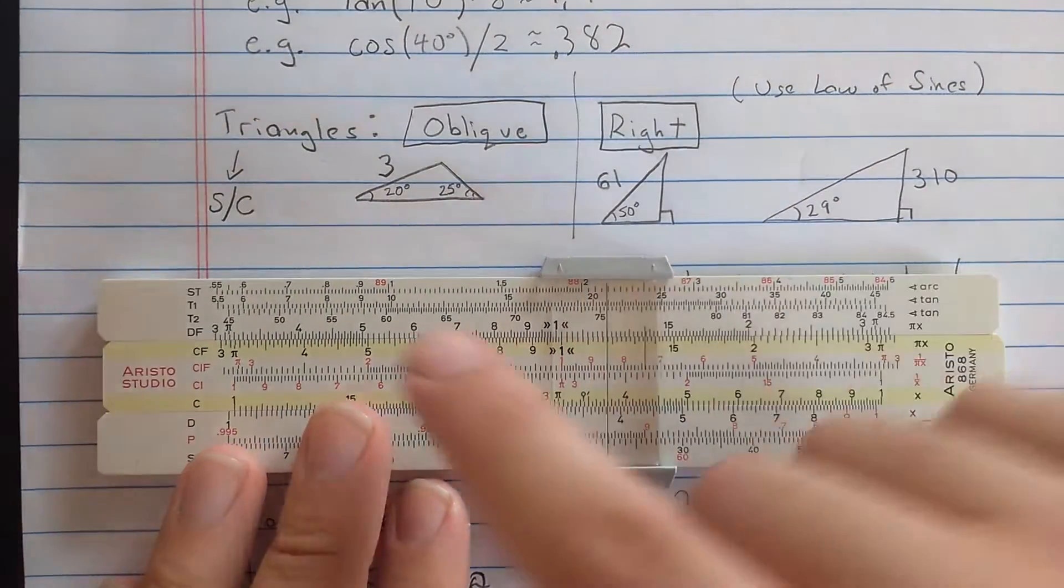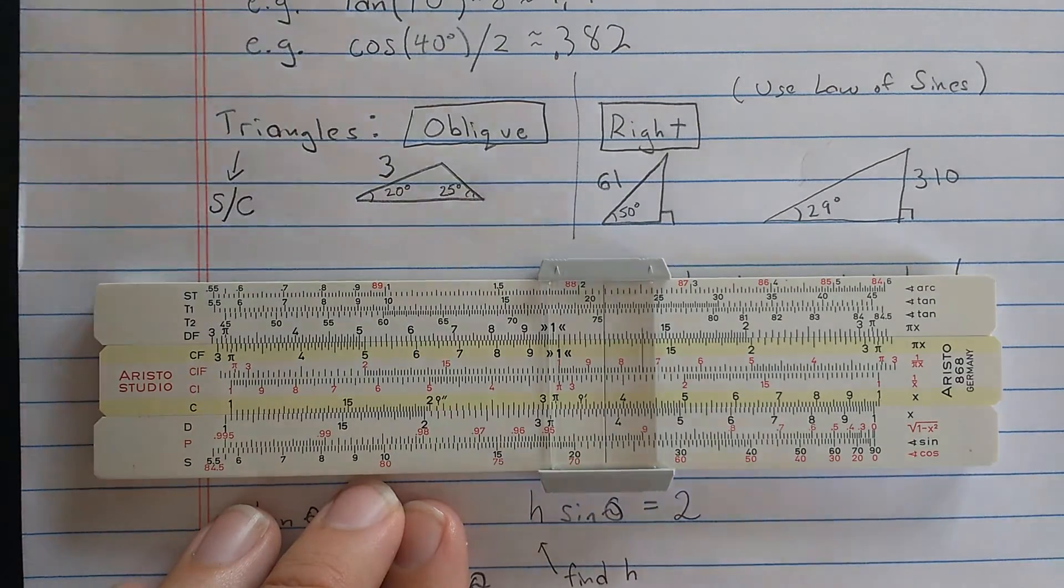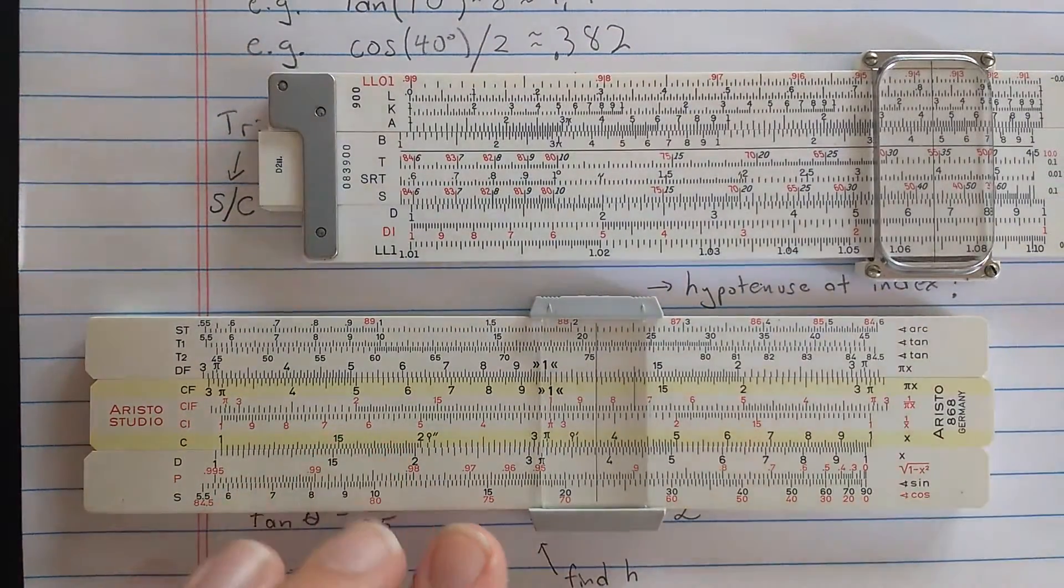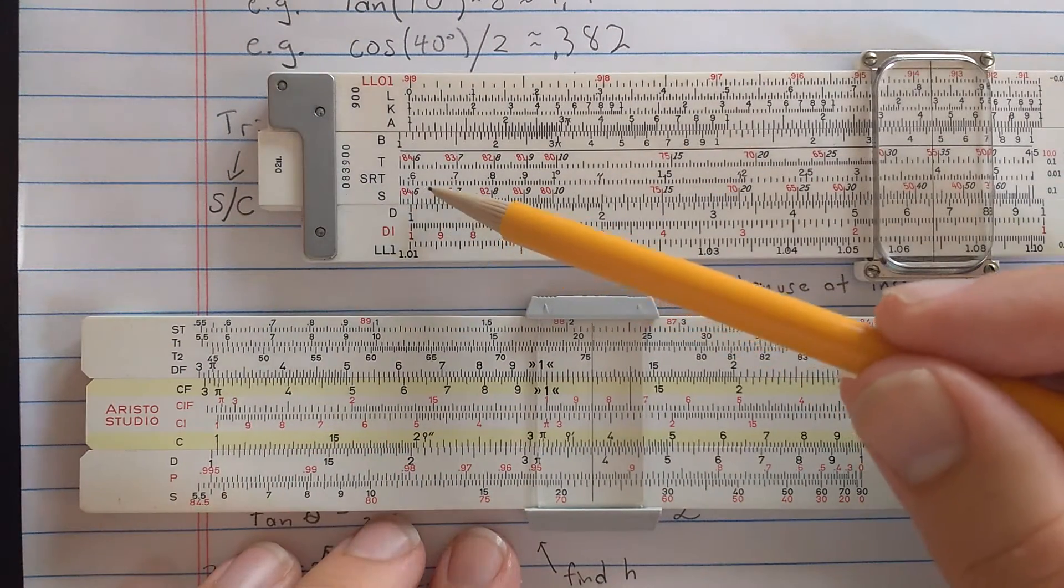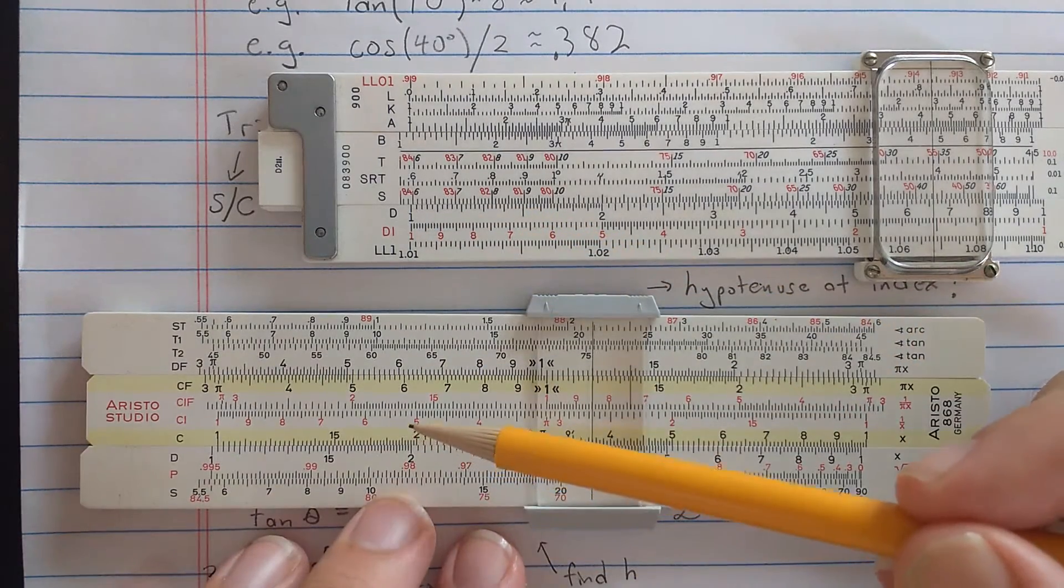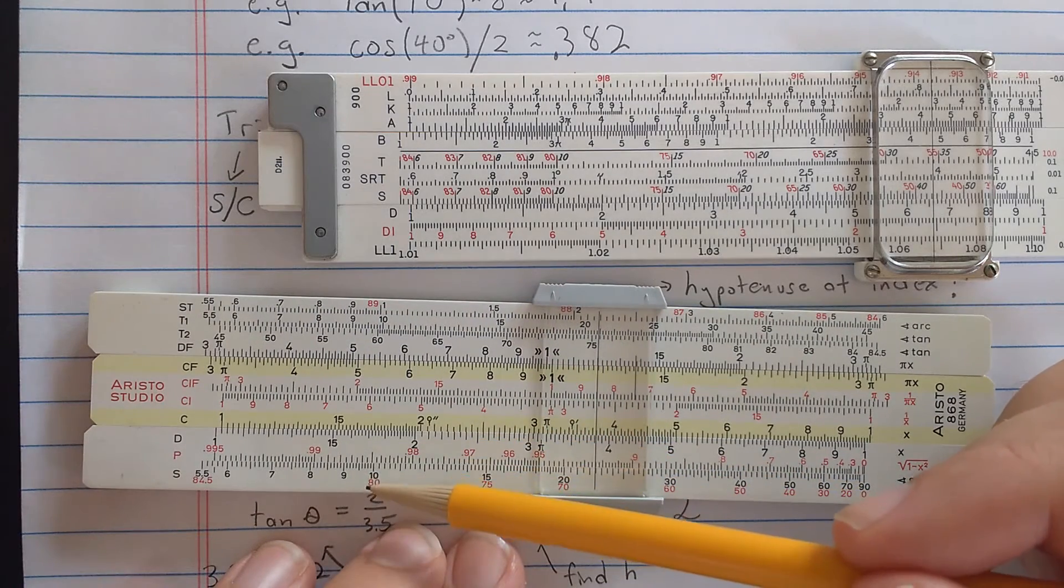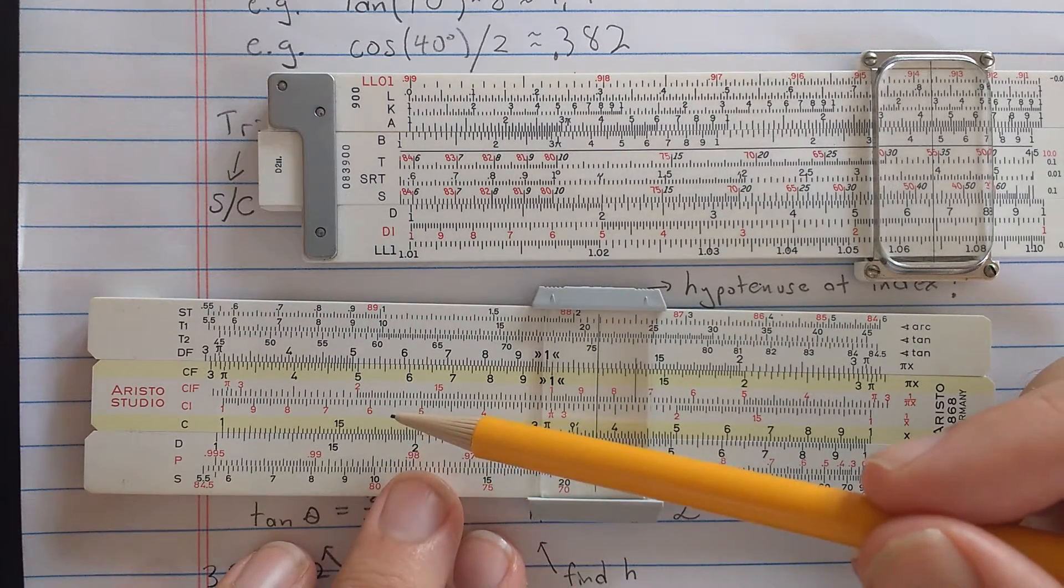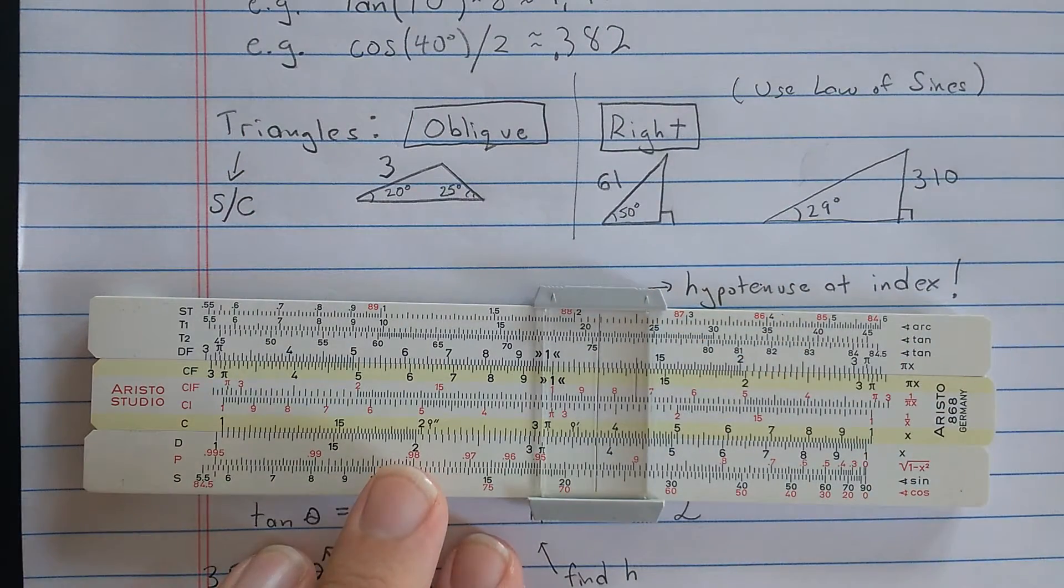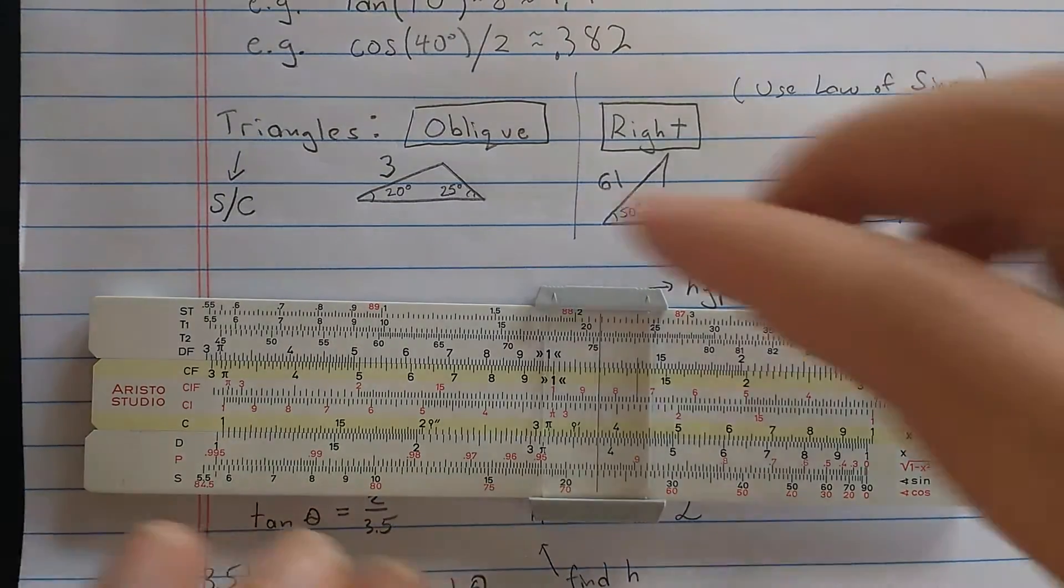So the nice thing is, between the S scale and the C scale, you can set up the law of sines. Now, on the American-type slide rule, with the trigonometry on the slide, you're using the S scale and the D scale, one on the slide, one on the base. With the European-style slide rule, the main difference here is I'm going to have to use the S scale on the base and the C scale on the slide instead of the D scale on the base here. So I'm using the S and the C scales.